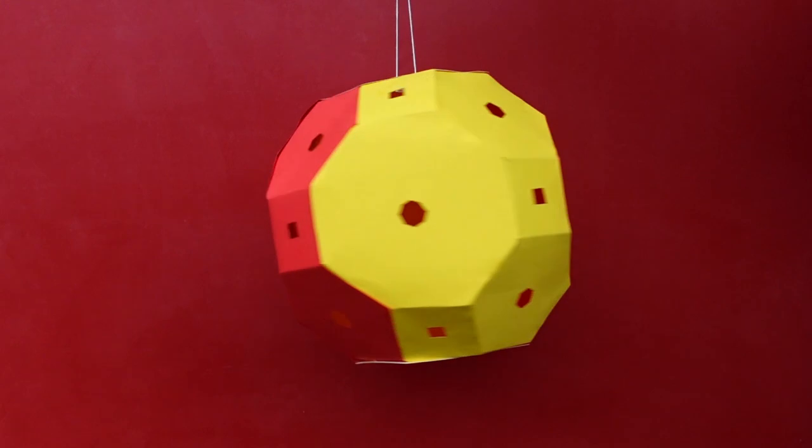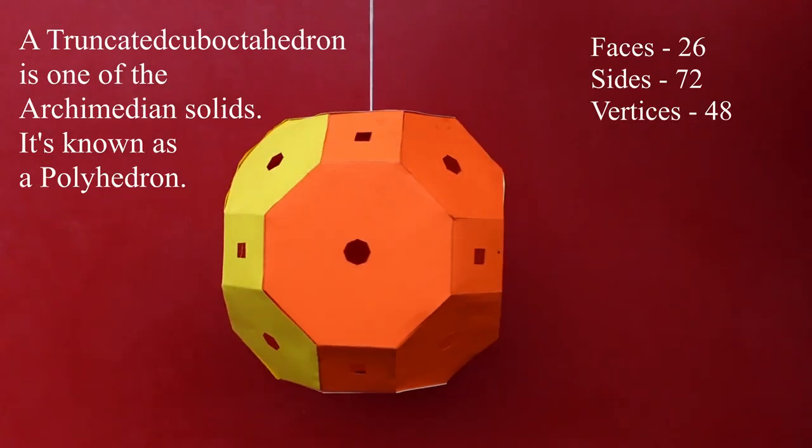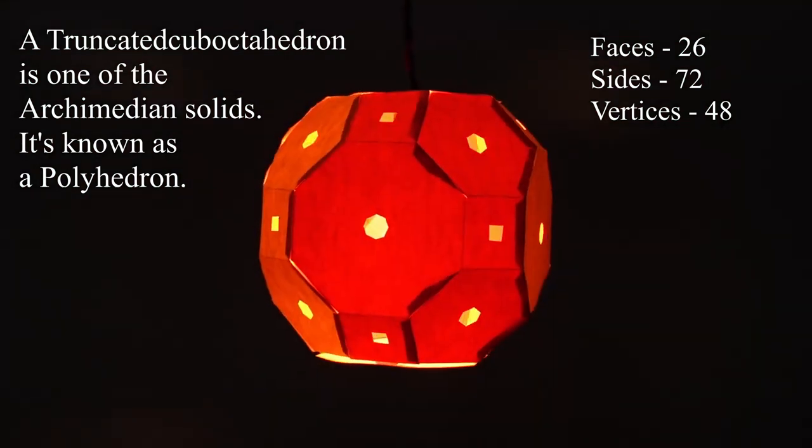This truncated cuboctahedron has 26 faces, 72 sides and 48 vertices. It is polyhedron.